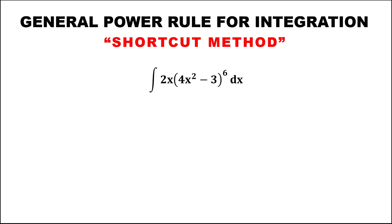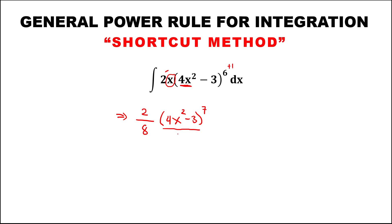For the next given, observe that in the equation inside the parenthesis there is x squared, so therefore there must be x outside the parenthesis. To evaluate the integral using the shortcut method, take the constant over the derivative of 4x squared, which is 8, then times the equation inside the parenthesis, then add 1 for the exponent, plus C.